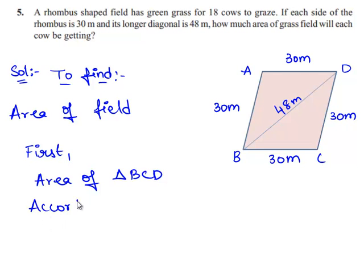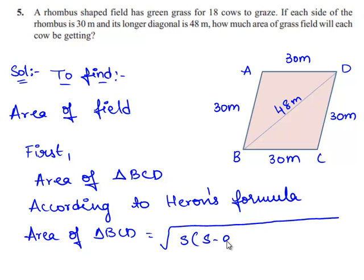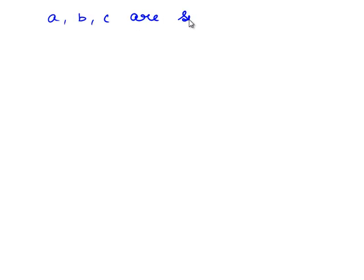We can find the area of triangle BCD according to Heron's formula, that is: area of triangle BCD = square root of S × (S − a) × (S − b) × (S − c), where a, b and c are the sides of the triangle and S is the semi-perimeter, which is equal to (a + b + c) divided by 2.